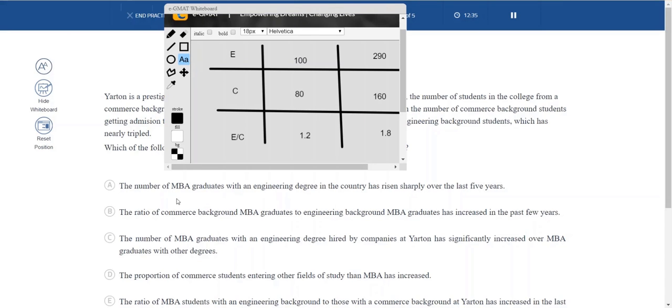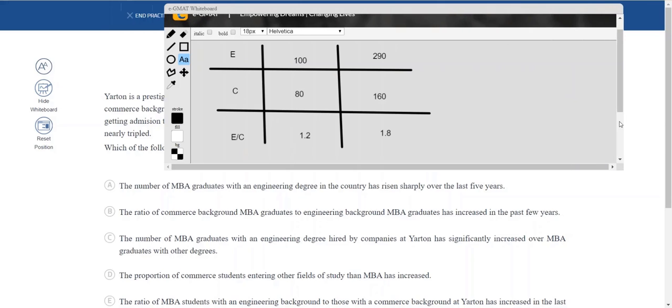The number of MBA graduates with an engineering degree has risen sharply over the last five years. Seems tempting but definitely not true because our analysis and our passage is very specific to Yarton. I cannot generalize about MBA graduates in the country, so option A is irrelevant. Now let's also talk about how we can do option analysis. Let's add that. Say option A is 1, option B is 2, option 3 is C, option 4 is D, option 5 is E.